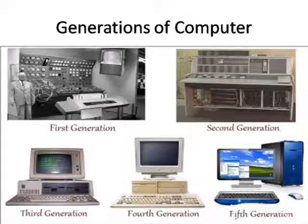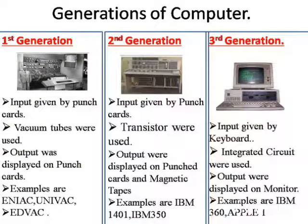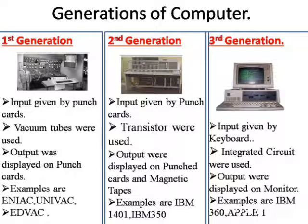The next topic is generations of computer. To make it easy to understand: just as man has evolved from a monkey to a human, similarly the computer has also evolved — from first generation vacuum tubes to fifth generation artificial intelligence. In the first generation, input was given by punch cards, vacuum tubes were used, and examples are ENIAC, EDVAC, and UNIVAC. In the second generation, input was given by punch cards, transistors were used, and output was displayed on punch cards and magnetic tapes.